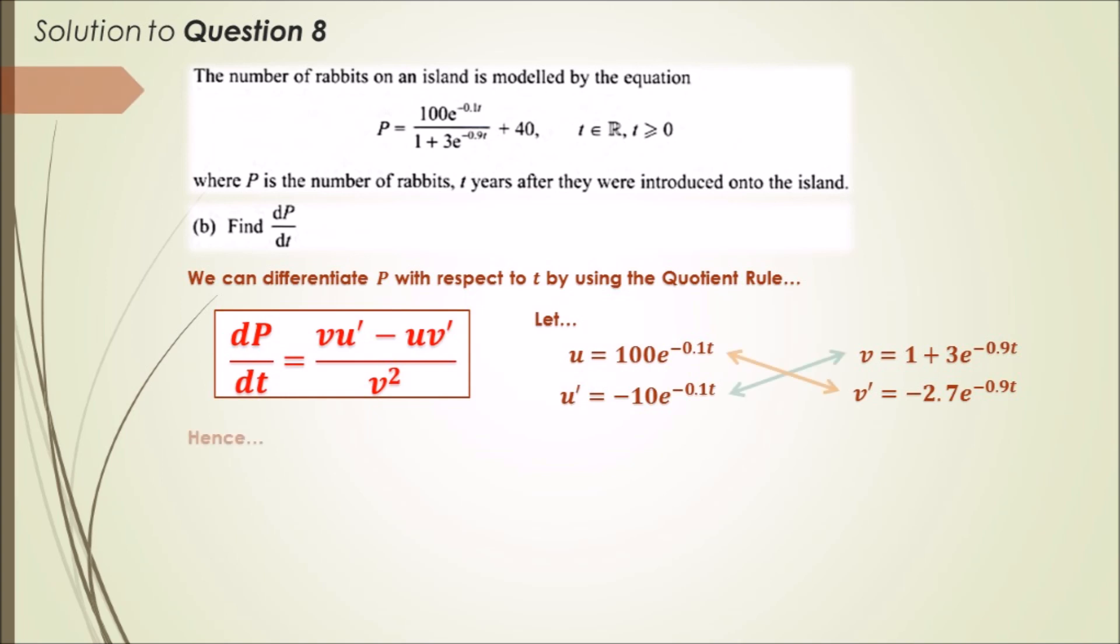Now we plug all of that into the dP/dt equation and we should get the following. It's all about construction. I tend to put the longer term second, so v times u prime—I did minus 10e first. Notice you got negative 2.7 for v prime, so I put that first before the u.